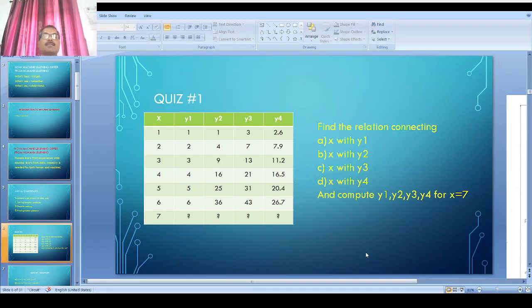Let us see a simple quiz. You can see this table. There are multiple columns: the first column is x, second column is y1, third column is y2, then y3 and y4.